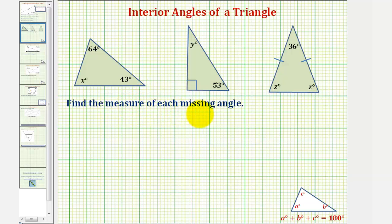We want to find the measure of each missing interior angle of the given triangles. Notice our first triangle is a scalene triangle because all sides are different lengths and therefore all the angles have a different measure.